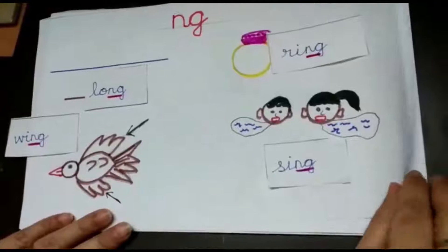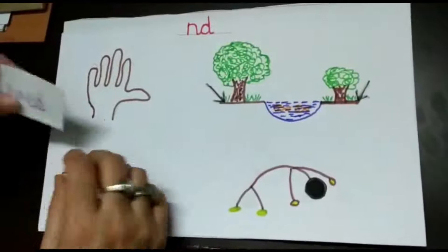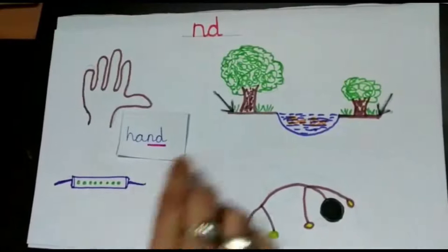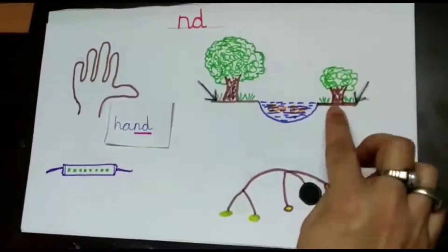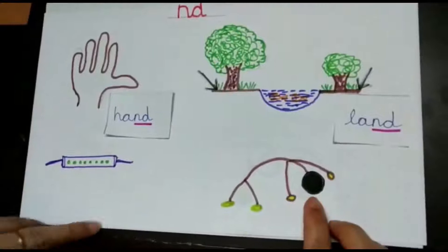Now we come to the next set of blends, that is nd, nd. Yes, what is this? Hand, hand. And here you can see the black arrow pointing towards the brown line, that is land, land. Now, when you do exercise, then you bend, bend.